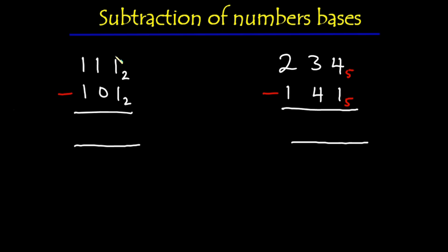In this video we're going to focus on subtraction of number bases. So let's say we're given 111 in base 2 minus 101 in base 2. Before we start, one important thing to note is that when it comes to number bases, we always start solving from the right column by column to the left. So in this case we're going to start from this column and then subtract to the left.